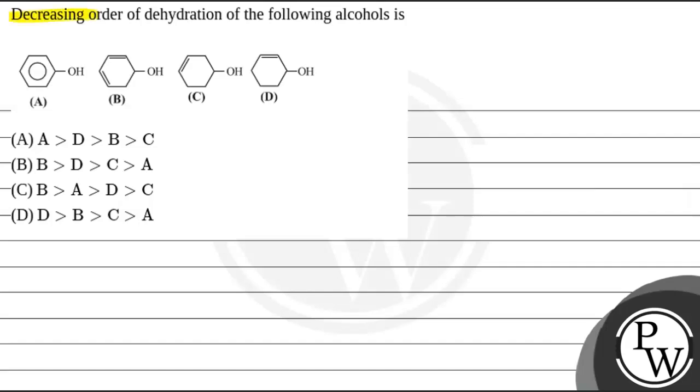So in this question, the decreasing order of dehydration of the following alcohols is given. Here we have four different types of alcohols, one of the alcohols is phenol, and we have to find out which of the orders given in the four options is the decreasing order of dehydration.